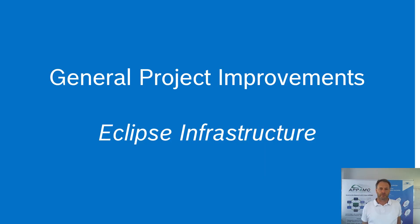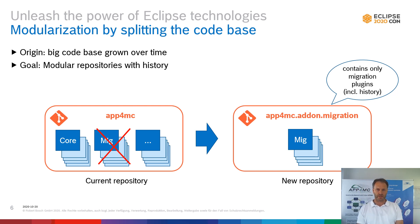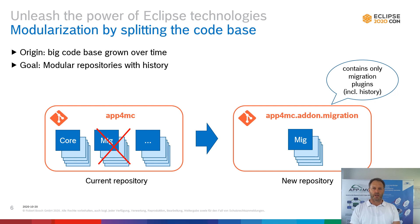The first part: general Eclipse improvements. We tried to modularize our repositories first. Here you see one stack — the migration component and its history — and we want to move this to another repository without any other deleted parts.